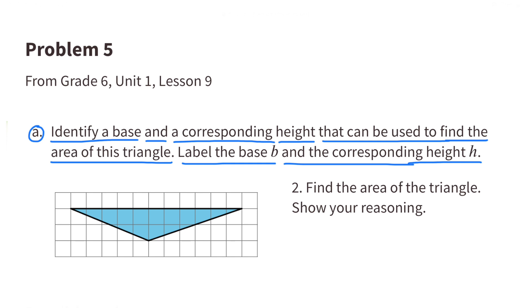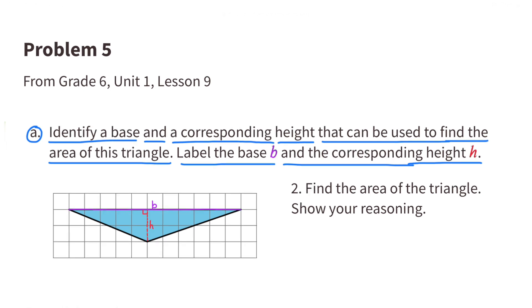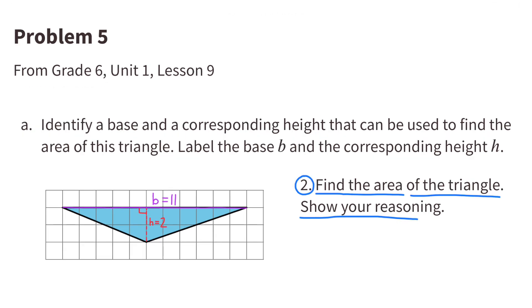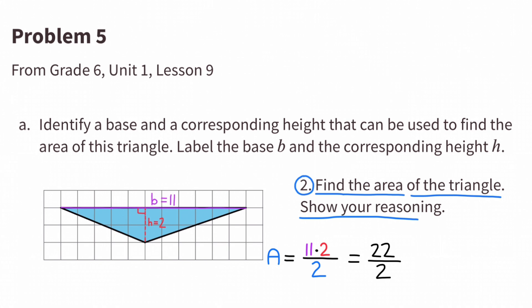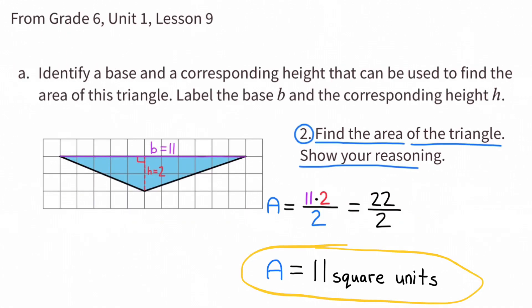Number 5. Identify a base and a corresponding height that can be used to find the area of this triangle. Label the base B and the corresponding height H. The base is labeled B and represents 11 units. The height is labeled H and represents 2 units. Now we have to find the area of the triangle and show our reasoning. To find the area of a triangle, we need to multiply the base times the height and divide it by 2, or multiply half the base times the height. 11 times 2 divided by 2 is 11 square units. The area of the triangle is 11 square units.